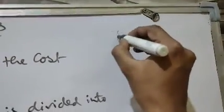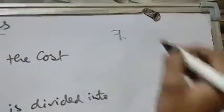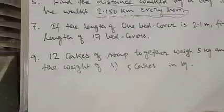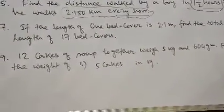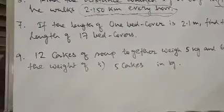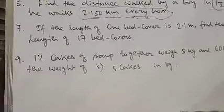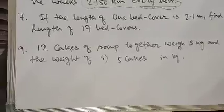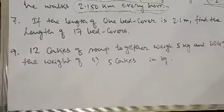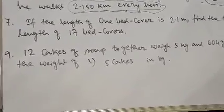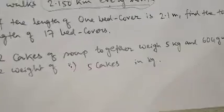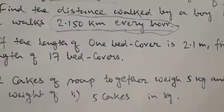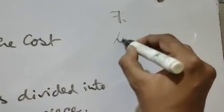Question number seven: the length of one bed cover is 2.1 meters. Find the total length of 17 bed covers. We simply multiply 2.1 by 17 to get the total length of 17 bed covers.